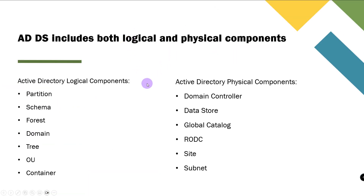On my slides here, I want to show you where it includes both logical and physical components. When it comes to the structure of Active Directory, on the logical side you will notice we have partitions, the schema, forest, domain, domain trees, and containers, among other things.